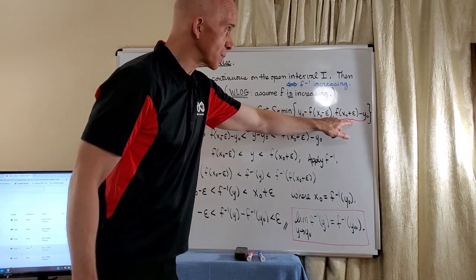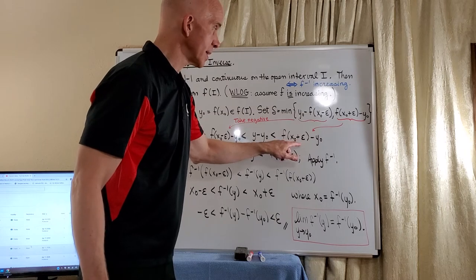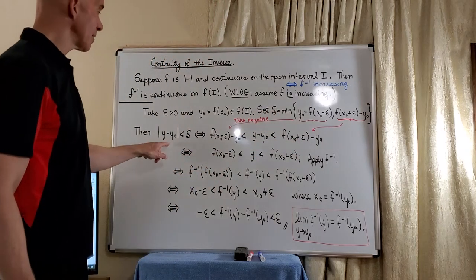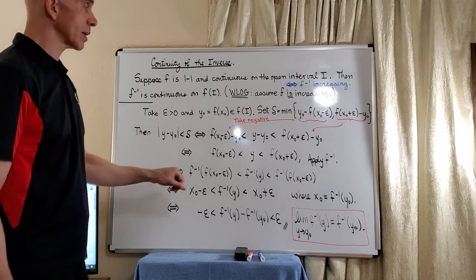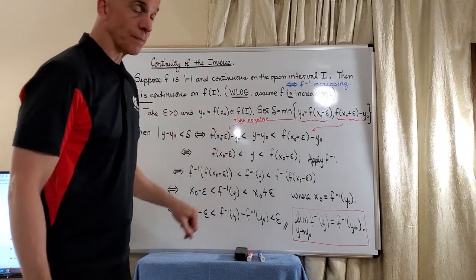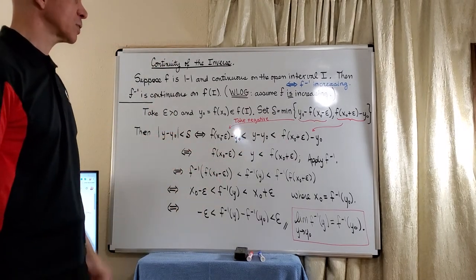And we can take this particular positive number and place it here. By this definition of delta and this absolute value inequality, we know that this is true. And it turns out to be a very useful inequality.